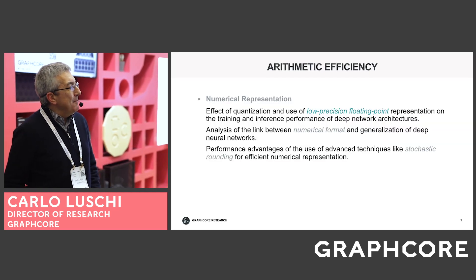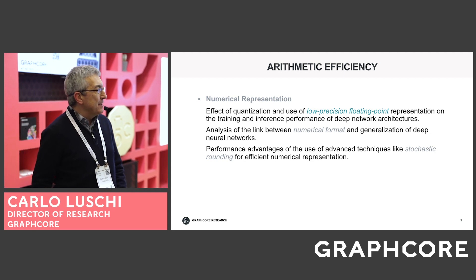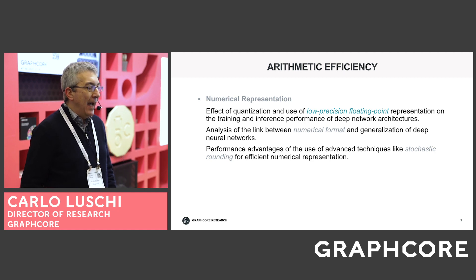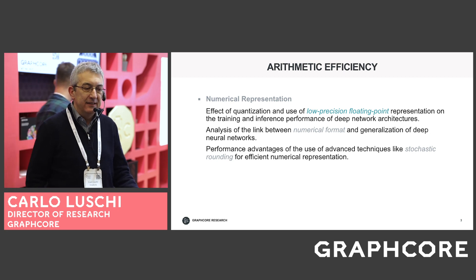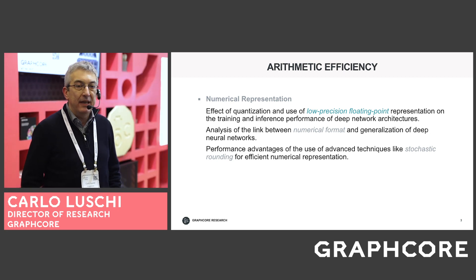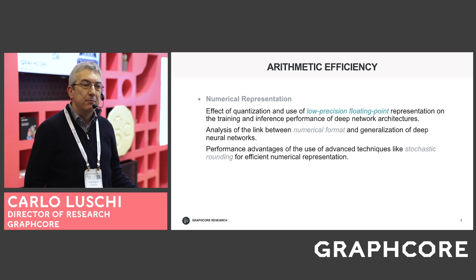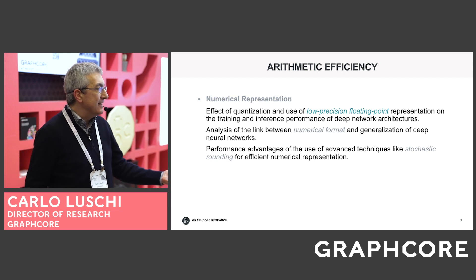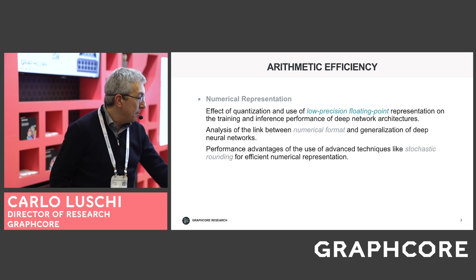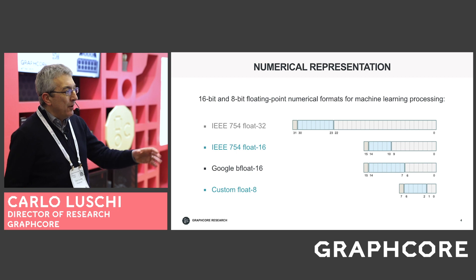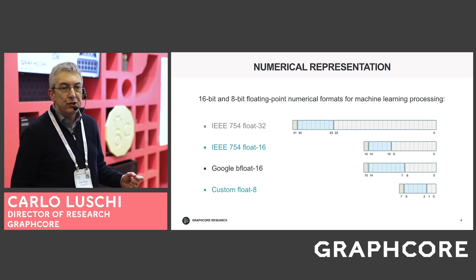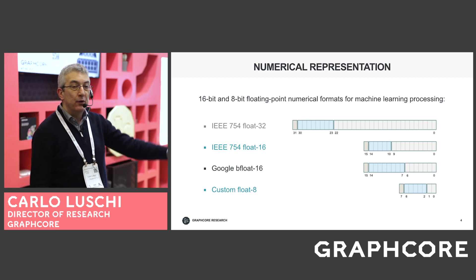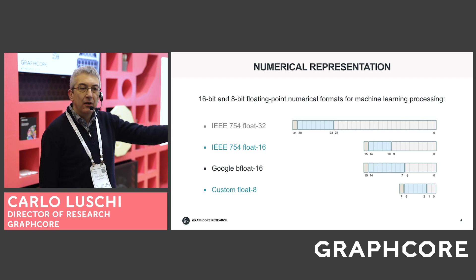Starting from arithmetic efficiency, the use of low precision floating point formats has been really important to speed up training in machine intelligence over the last few years. The state of the art until recently has been mixed precision with 16-bit floating point, and we are addressing this field with more aggressive numerical formats — fundamental both for learning and efficiency. The work we are doing now will be mixed precision based on float16 and float8 formats, pushing to lower and lower bit widths.